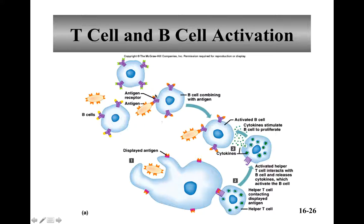For T cell and B cell activation: the macrophage took in a bacterium, chewed it up, and displayed the bacterial antigens on its surface. A helper T cell comes along, recognizes this antigen as foreign on the macrophage, and becomes activated. The activated helper T cell releases cytokines, which activate the B cell that is specific for that bacterium, enabling it to combine with the antigen and produce antibodies.